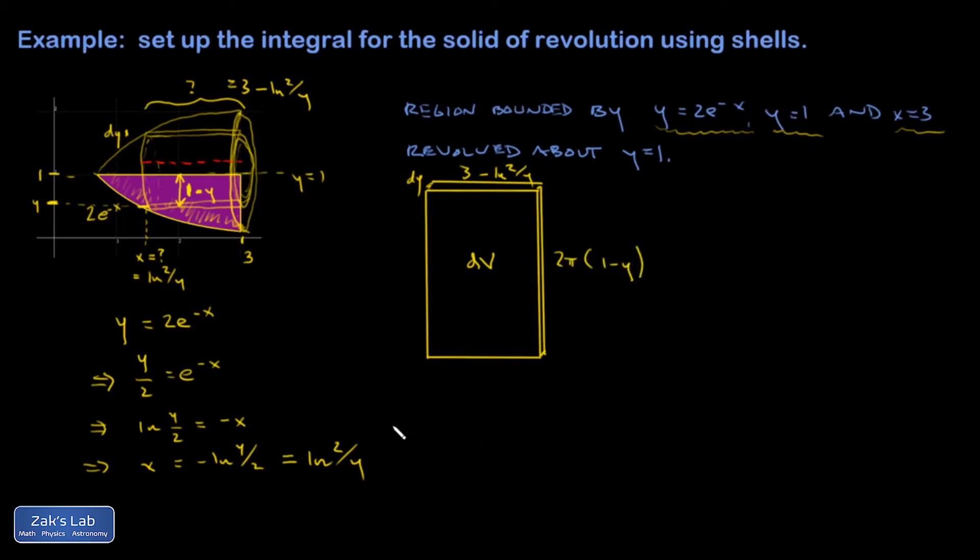And now I just use simple geometry to say what the volume of the shell is. Length times width times height, so I have dV equals 2π times the quantity 1 minus y times 3 minus natural log of 2 over y times the thickness dy.